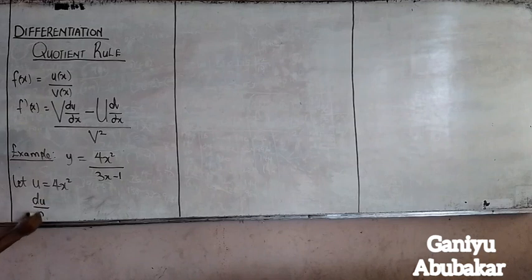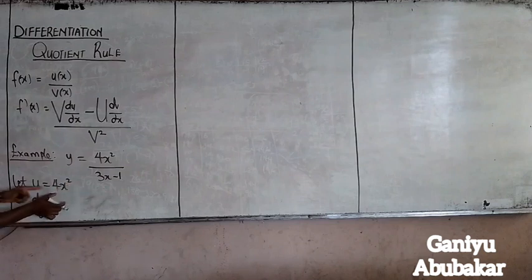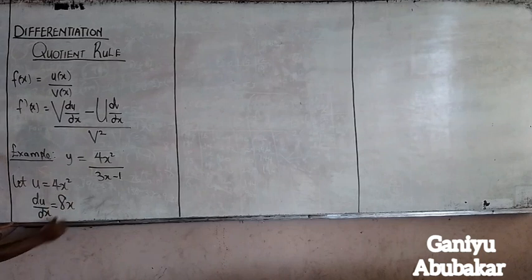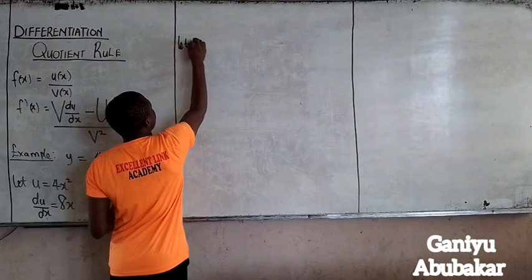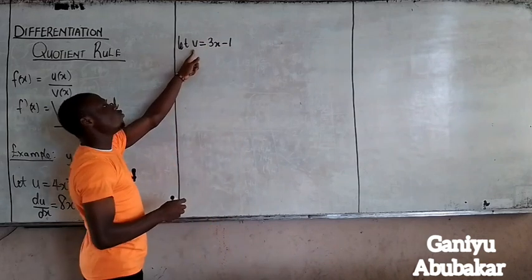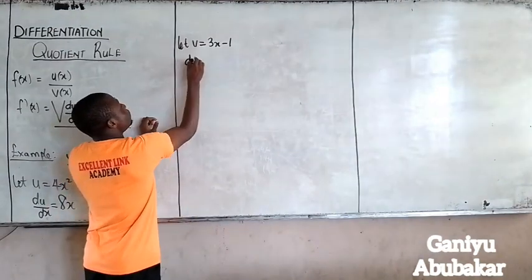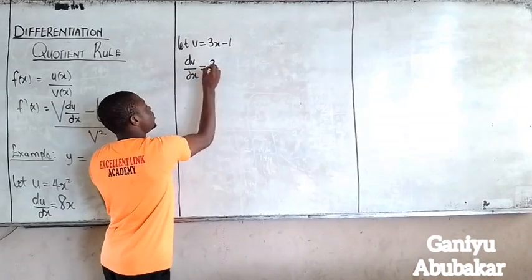We call the numerator u and the denominator v. So u equals 4x squared. Differentiate u with respect to x. Using the general method — multiply by the power, which is 2, multiplied by 4 — I will have 8x. So if I differentiate 4x squared, I get 8x. Also, let v be equal to 3x minus 1. Differentiate v with respect to x. I will have dv/dx equal to 3, from the general method.